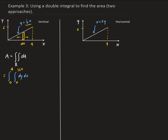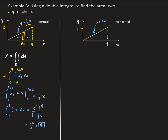Let's go ahead and solve it. We're going to integrate dy from zero to one-half x. The integral of dy is y, evaluated from zero to one-half x, which gives us one-half x. Now we take the integral of one-half x from zero to four with respect to x. That gives us one-half times x squared over two, so x squared over four, evaluated from zero to four. That gives us 16 over four, which equals four. So that is the area for this region.